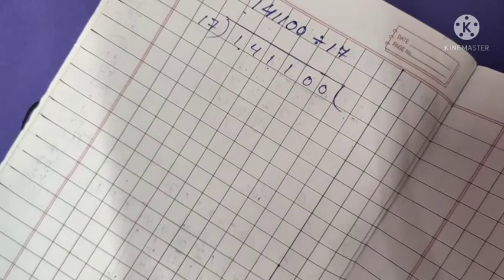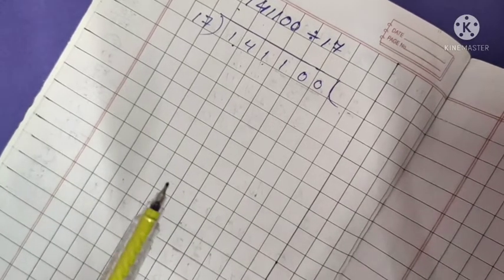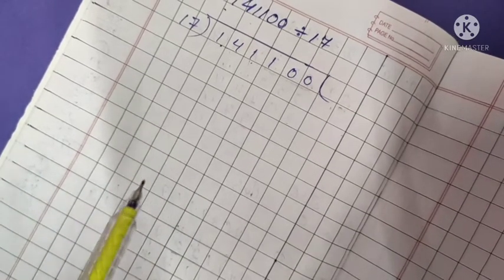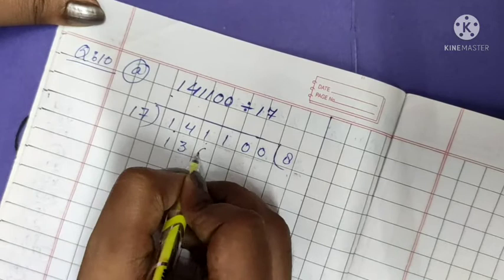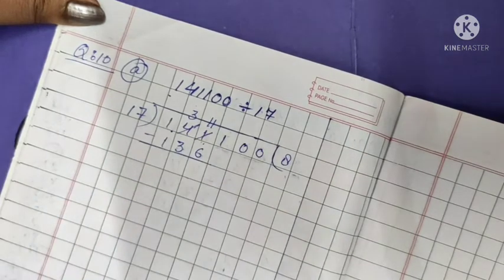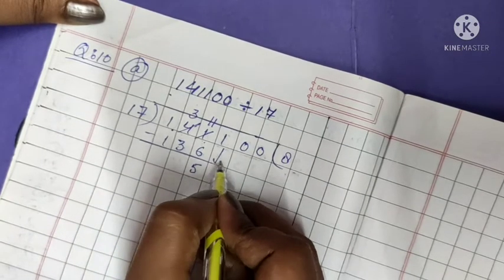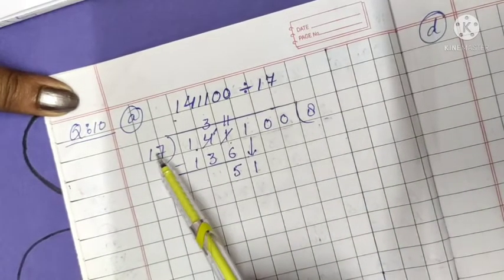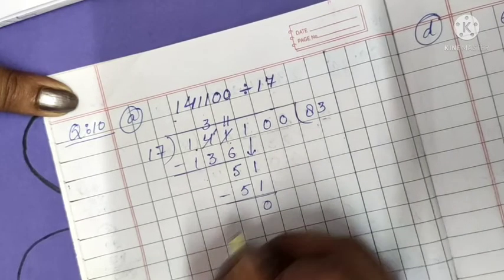Continuing the table: 17 × 7 = 119, 17 × 8 = 136. So we write 17 × 8 = 136 and subtract. We get 11 here — 11 minus 6 is 5, giving 00. Now calculate again: check the table with 17. 17 × 3 = 51, so we write 17 × 3 = 51 and we get 0 remainder.